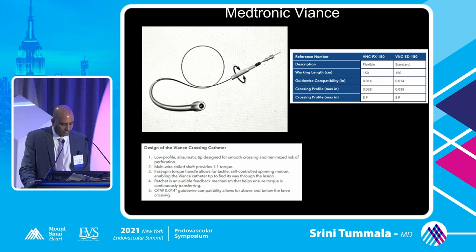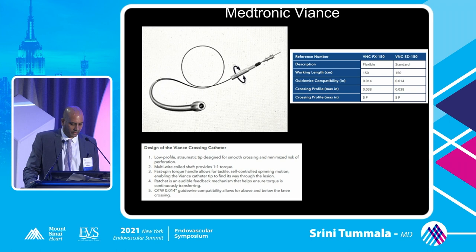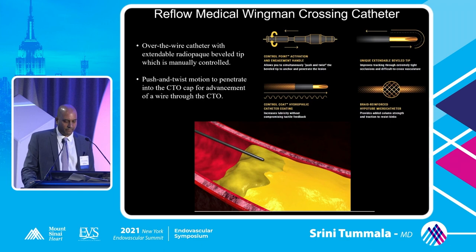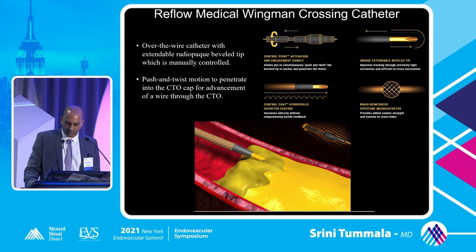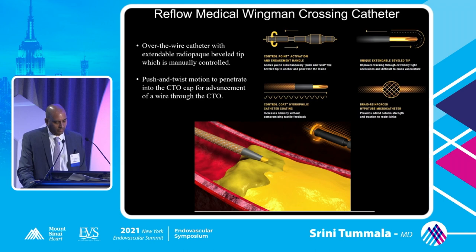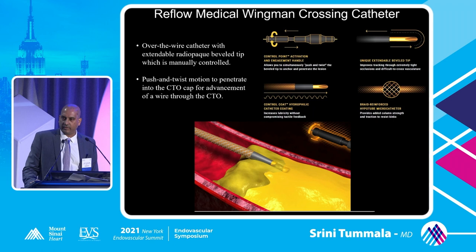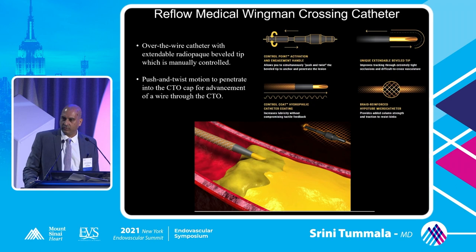The Medtronic Viance is another catheter with a handle you can rotate quickly to dissect through a CTO and allow guide wire access. The Wingman crossing catheter by Reflow is a braided reinforced micro catheter through which you place a radiopaque beveled tip, allowing you to rotate and direct your guide wire to pierce really dense calcified CTO caps. It's very radiopaque and can be used to gain through-and-through access.